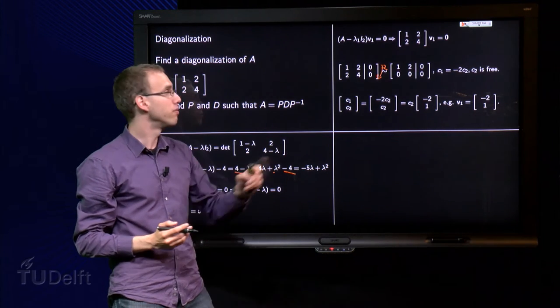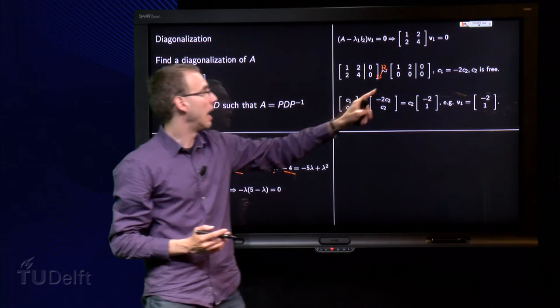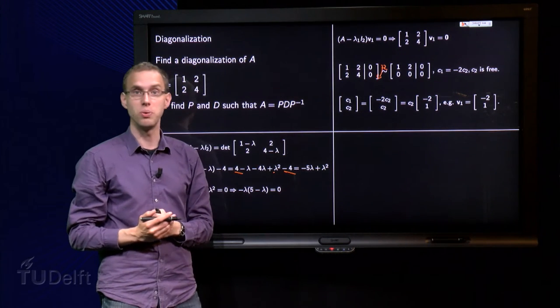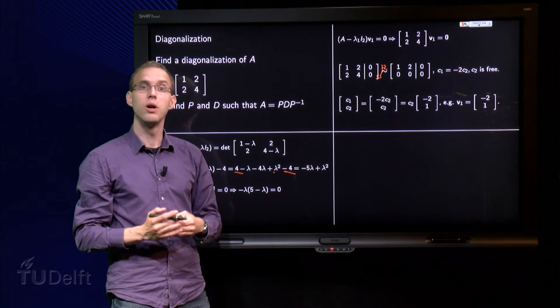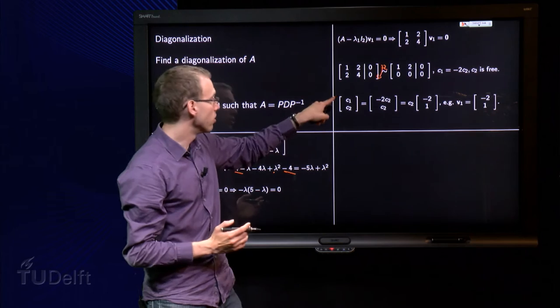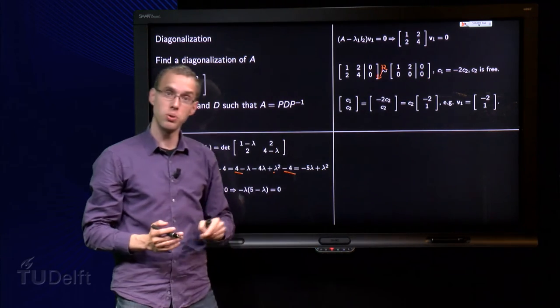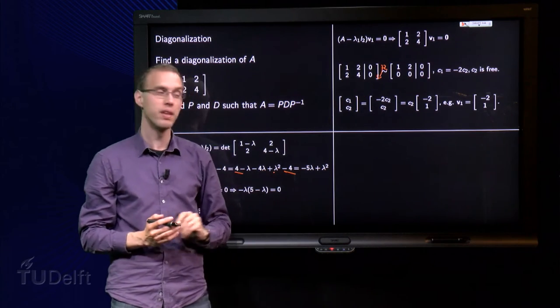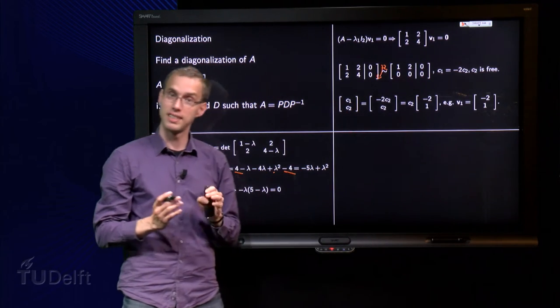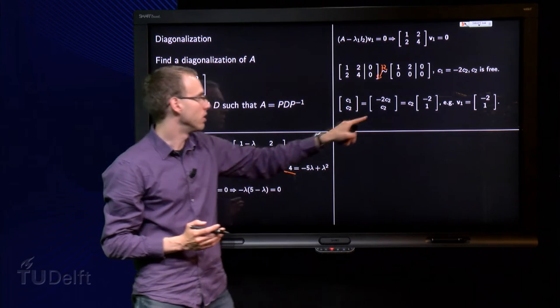And we have our reduced echelon form already. And we see that we have a free variable. We can take for example C2 to be free, and C1 equals minus 2 times C2. Well, how do we find an eigenvector? We have to make the parametric vector form of the solution. So, C1 equals minus 2 C2, so that's placed over here. And C2 is free, so it stays there. You can take this C2 out, so C2 times minus 2, 1.